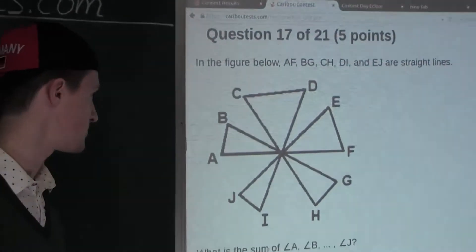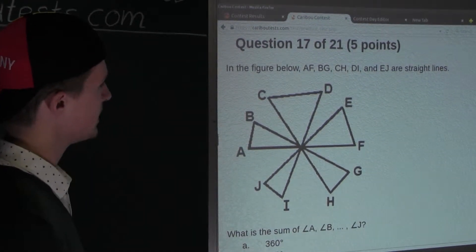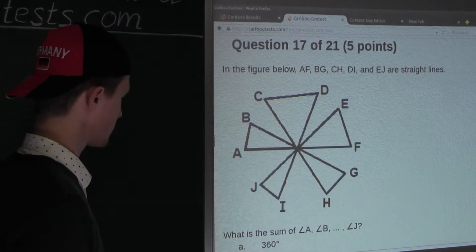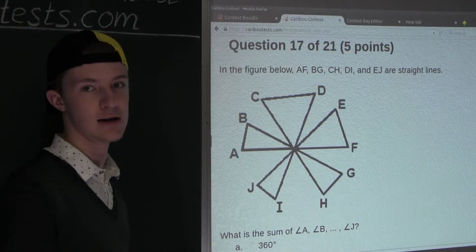So the question is, in the figure below, AF, BG, CH, DI, and EJ are straight lines. What is the sum of angle A, angle B, and so on, and angle J?